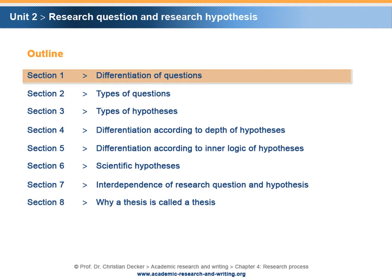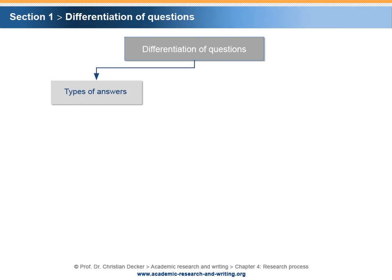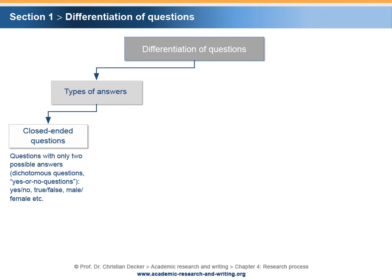Section 1: Differentiation of questions. There are different ways of posing a question. Firstly, questions can be differentiated according to the type of the expected answer. Closed-ended questions are questions that permit a limited choice of responses. Closed-ended questions with two possible answers are called dichotomous questions or yes-no questions. The answer is either a simple yes or no, or a choice between two possibilities such as true or false, male or female, etc.